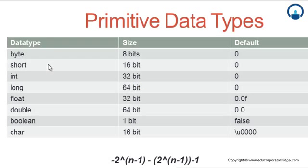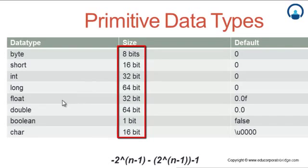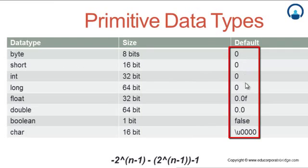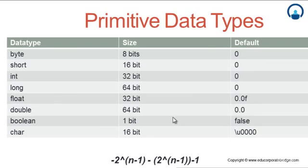We have a whole lot of data types in Java called primitive data types: byte, short, int, long, float, double, boolean, and char. In terms of size: byte takes 8 bits, short 16 bits, int 32 bits, long 64 bits, float 32 bits, double 64 bits, boolean 1 bit, and char 16 bits. If you don't give them a value, they take default values of 0. Double and float deal with decimal values, and every data type has a certain range calculated by a formula.